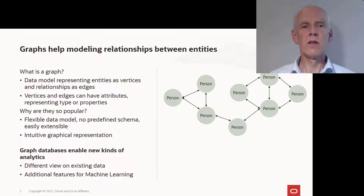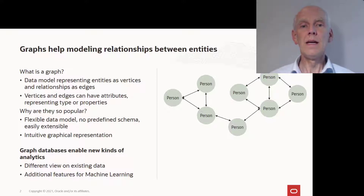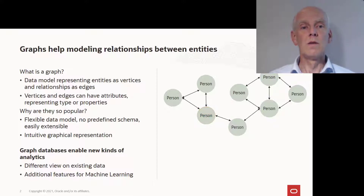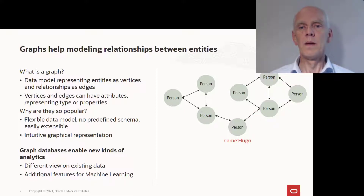Just like in this social network here. While in the relational world you store data in tables, here I'm storing information in this network-like form. I have vertices of type person, edges of type connection, and the vertices of type person can have properties such as a name.